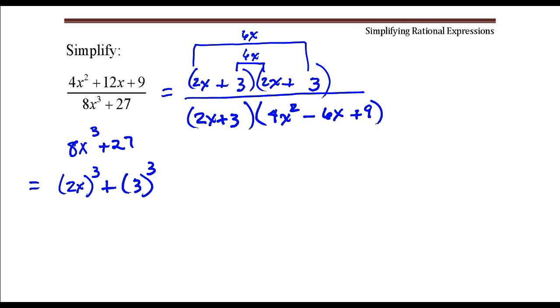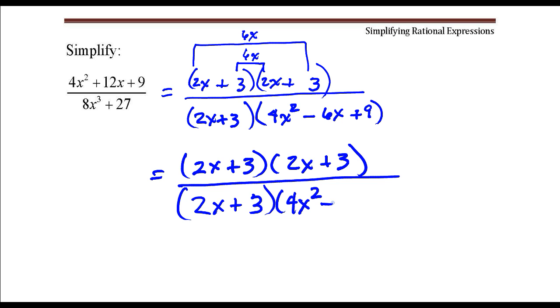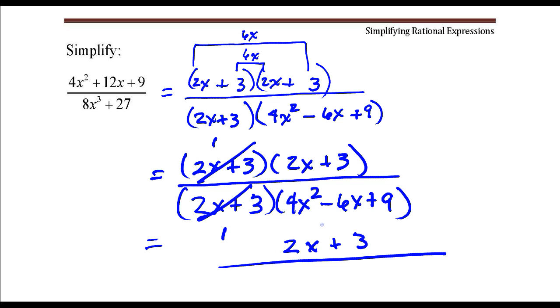Alright, so let me get some space here and rewrite this. The next thing to do is to divide out factors common to both numerator and denominator, and 2x plus 3 is common to both numerator and denominator, and we'll go ahead and divide those out and write out what we have left over. We have 1 times 2x plus 3 in the numerator, so that's going to be 2x plus 3, and then in the denominator we have 1 times this trinomial, so that would just be 4x squared minus 6x plus 9, and that's it.